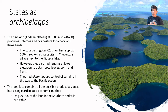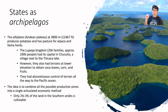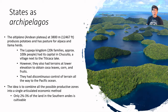The Lupaca state had colonies — enclaves which allowed them to access products not available at the high altitude plateau. In other regions, they were able to cultivate coca, which was very important for ritual and to keep people working as a stimulant. They could also obtain fruit, corn — which was very much appreciated — and other types of crops.